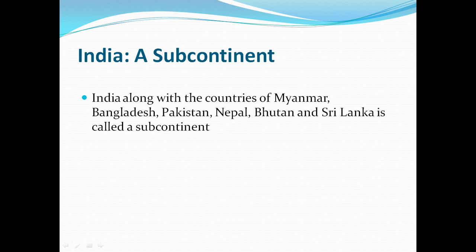India is called a subcontinent. India, along with Myanmar, Bangladesh, Pakistan, Nepal, Bhutan and Sri Lanka, forms this region which is separated from the rest of Asia by a chain of mountains in the northwest, north and northeast, and by seas in the south. This region possesses distinct continental characteristics in physiography, climate, natural vegetation, minerals, and human resources. Hence India is known as a subcontinent.